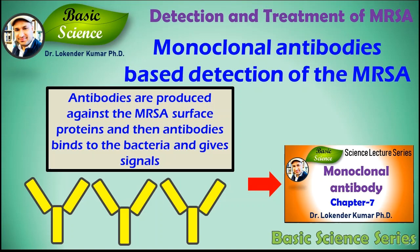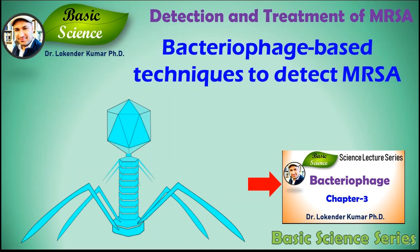There are monoclonal antibody-based detection methods for MRSA infections, where monoclonal antibodies are produced against MRSA surface proteins. The antibodies bind to the bacteria and provide signals for the presence of the bacteria. Please watch episode 7 to know more about monoclonal antibodies.